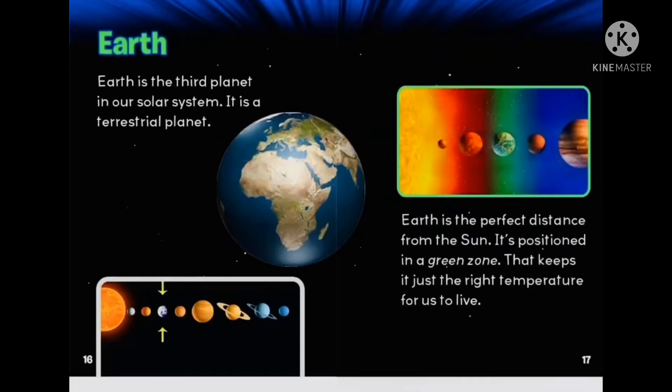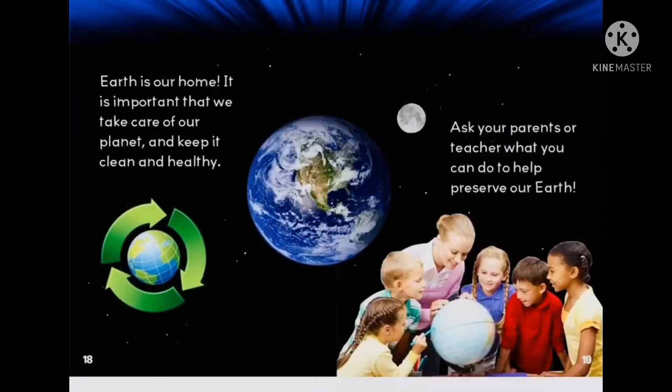Earth. Earth is the third planet in our solar system. It is a terrestrial planet. Earth is the perfect distance from the sun. It's positioned in the green zone that keeps it just the right temperature for us to live. Earth is our home. It is important that we take care of our planet and keep it clean and healthy. Ask your parents or teacher what you can do to help preserve our Earth.